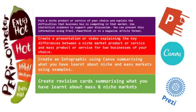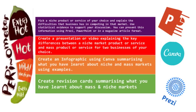We're now going to look at this week's homework menu — you can choose one of four tasks. Task one: create revision cards summarising what you've learned about mass and niche marketing using PowerPoint or Word. Task two: create an infographic using Canva summarising mass and niche markets with business examples. Task three: create a presentation or video explaining the key differences between a niche and a mass market product or service for two businesses of your choice.